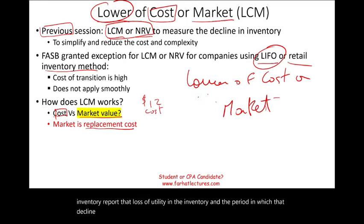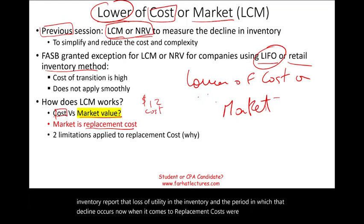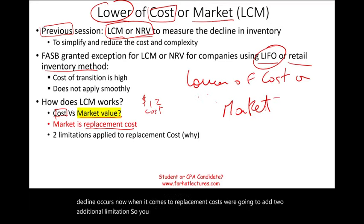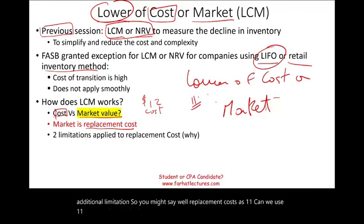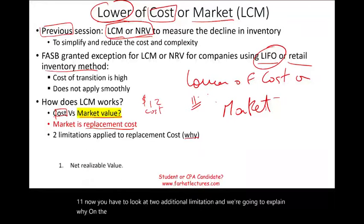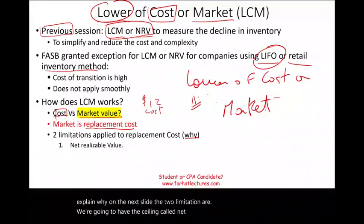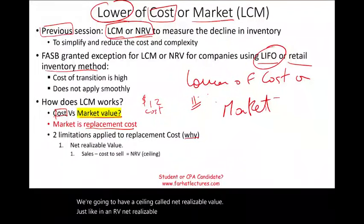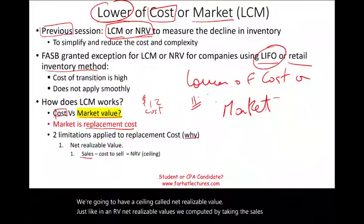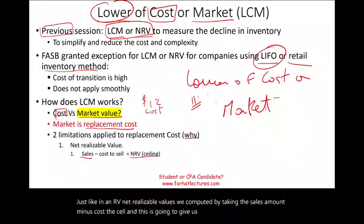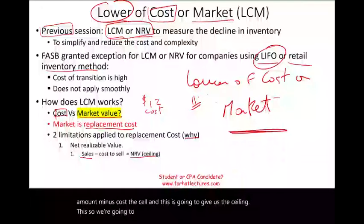When it comes to replacement costs, we're going to add two additional limitations. You might say replacement cost is $11 — can we use $11? No. You have to look at two additional limitations. The two limitations are: we're going to have a ceiling called net realizable value. Net realizable value is computed by taking the sales amount minus cost to sell, and this gives us the ceiling.